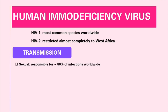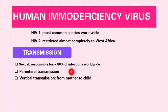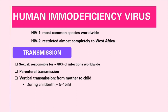Let's talk about transmission of HIV. There are three main ways: sexual, parenteral, and vertical transmission. Sexual transmission is responsible for about 80% of infections. Parenteral refers to sharing needles, such as among IV drug users. Vertical transmission is from mother to child during birth, accounting for about 5–15%, and through breastfeeding for about 5–20%.